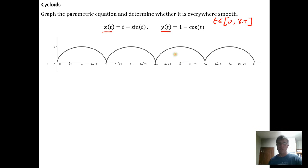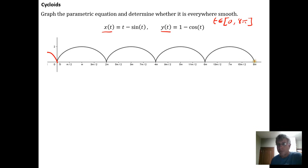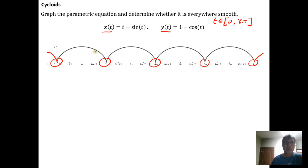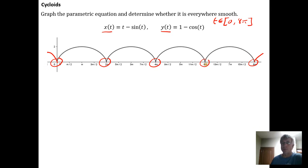I restricted my domain just to give us a picture to look at. What we want to focus on are these cusps — these sharp points — which are places where the curve is not smooth. Everywhere else it's smooth, and then suddenly you get this sharp directional change inducing a cusp.